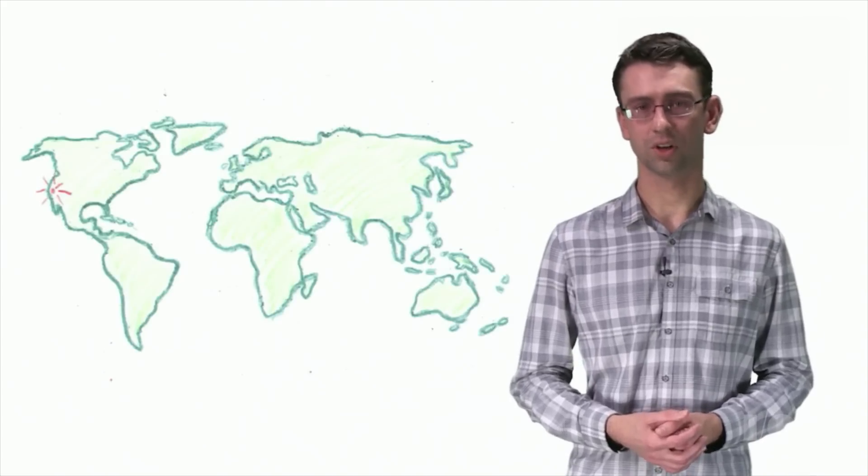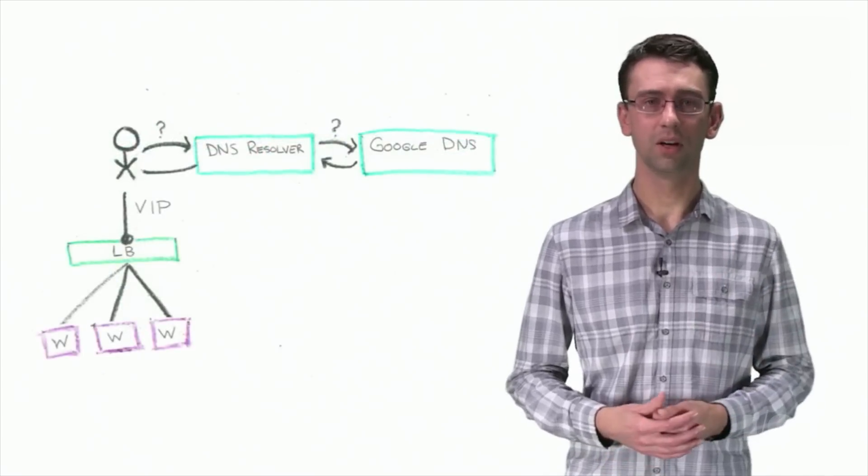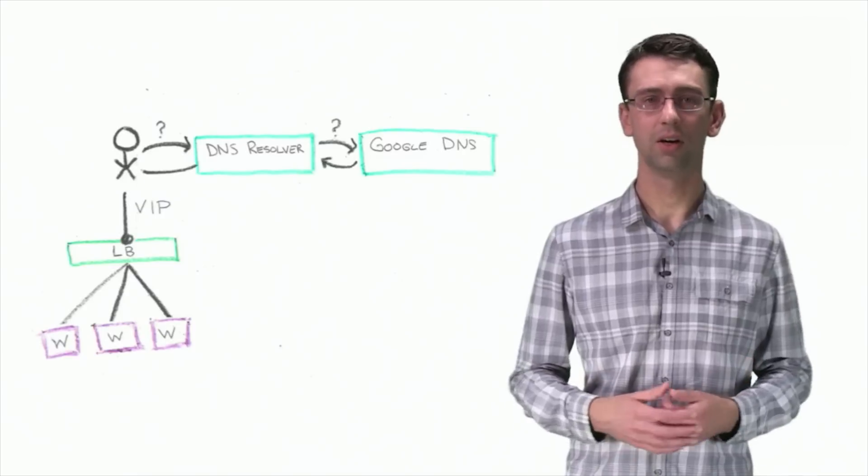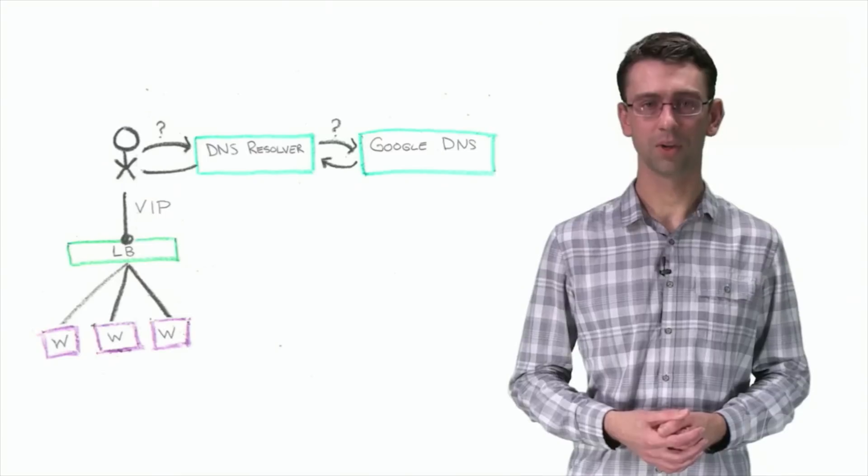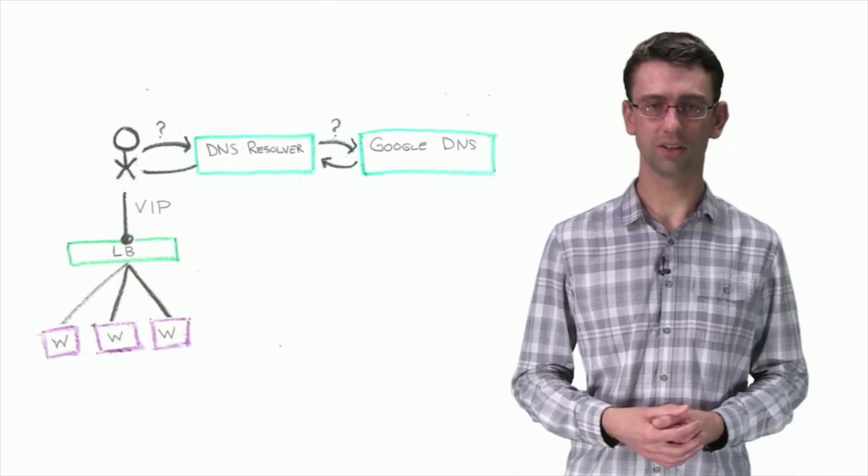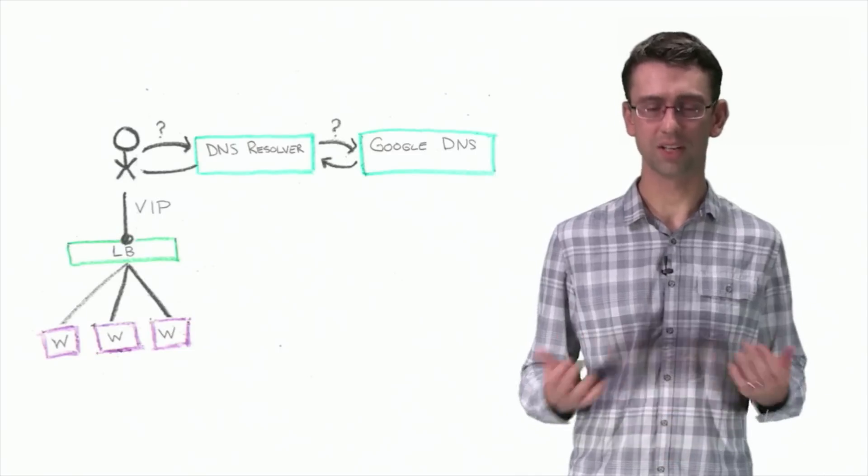In the beginning, Google's serving infrastructure was very simple, since we only had a single data center in California. We had a small number of web servers configured behind a hardware load balancer. The hardware load balancer had a virtual IP address, abbreviated as a VIP, which was provided to clients by one of our four DNS servers. There was very little redundancy in the system, so if there was ever a problem at the data center, Google.com would be down for everyone.